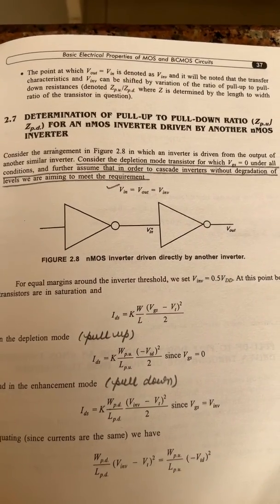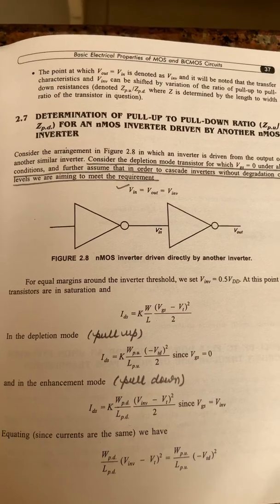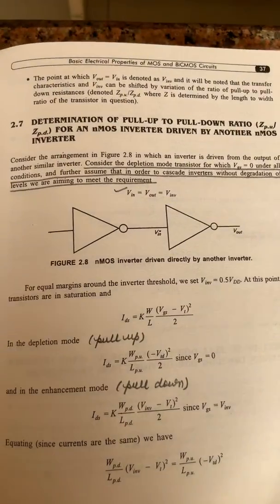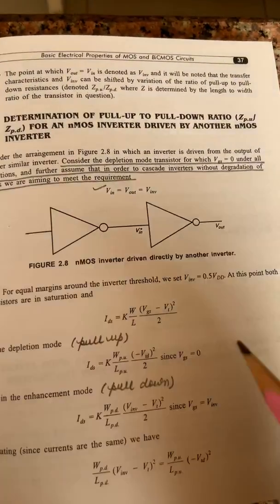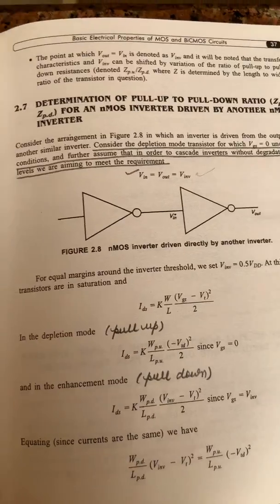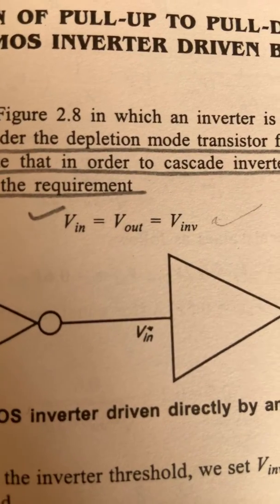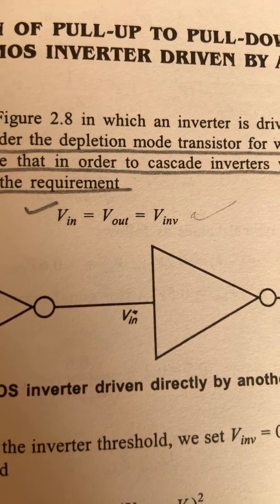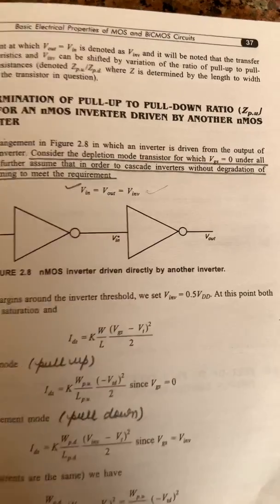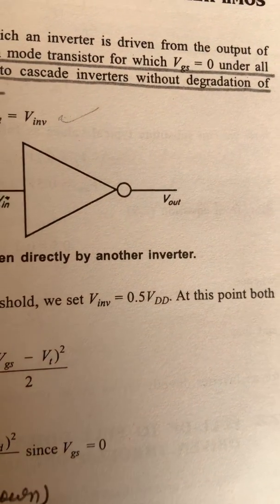We will consider the depletion mode transistor for which VGS equals 0 under all conditions, and further assume that in order to cascade inverters without degradation of levels, we aim to meet the requirement that VINF equals Vin equals Vout — that is, the inverter voltage. For equal margins around the inverter threshold, we set inverter voltage equals 0.5 × VDD, or half the supply voltage.